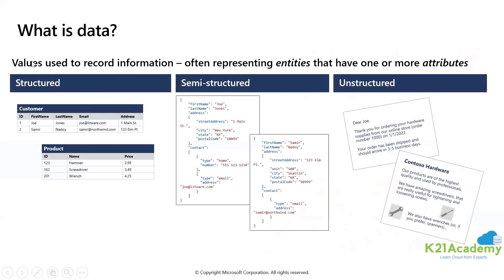When it comes to data, it is a collection of facts which could be in the form of numbers, descriptions, or recorded observations. Data structures in which this data is organized are very important entities, and that is the reason why we have to be sure about which category our data belongs to. Until and unless you're able to classify your data as either structured, semi-structured, or unstructured, you will not be able to choose the correct tool or the correct service to cater to your data.